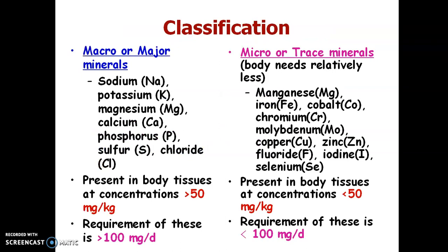Next is the classification. Mainly, minerals are classified into two groups: macro or major minerals, and micro or trace minerals. Don't confuse — major minerals means macro, and trace minerals means micro minerals. In the major minerals: sodium, potassium, magnesium, calcium, phosphorus, sulfur, and chloride.